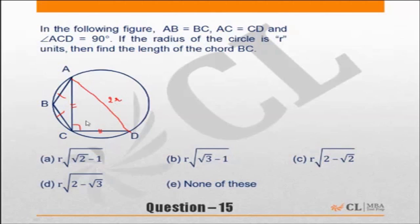AD is the diameter because the angle in a semicircle is 90 degrees. Since AD is 2r, and we have an isosceles right-angled triangle, AC and CD will each be 2r divided by root 2, that is root 2 times r. So AC as well as CD equals root 2r. Then root 2r and root 2r give hypotenuse root 2 times root 2r, which is 2r.